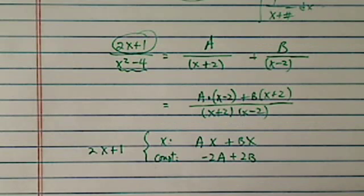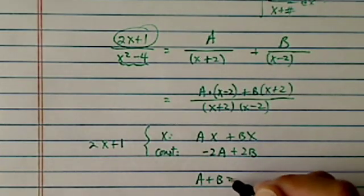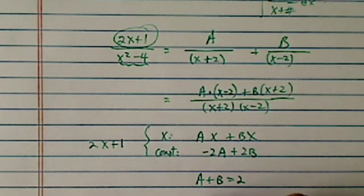So my x term, I need to get A plus B equal to 2. And then for my constant term, I have minus 2A plus 2B is equal to 1.